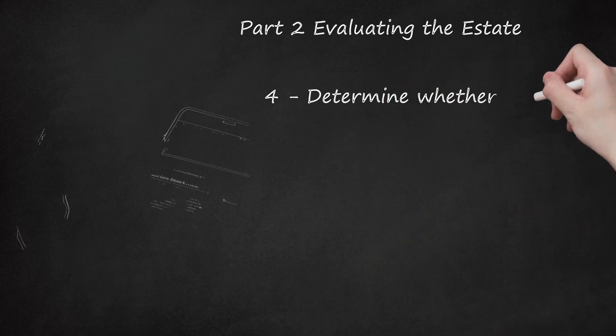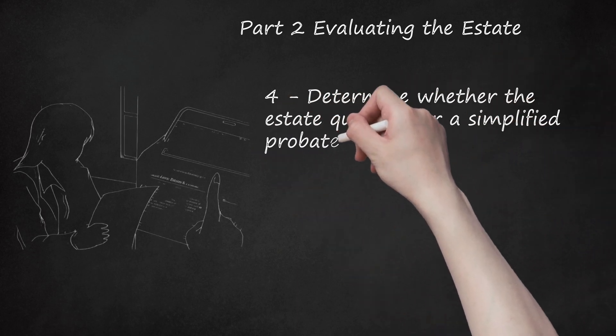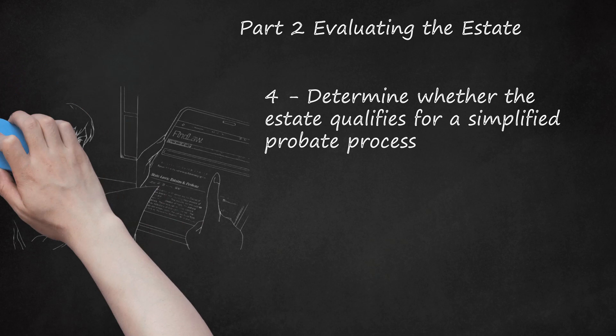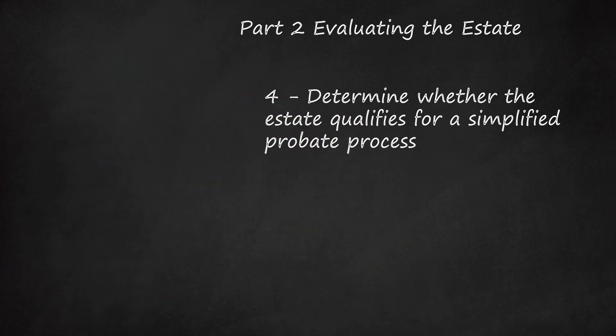Step 4: Determine whether the estate qualifies for a simplified probate process. Most states have a simplified process for small estates. Each state defines small estate differently, so you should check your state's probate laws for the definition of a small estate. You can find state probate laws at estate.findlaw.com/planning-an-estate/state-laws/estates-probate.html.